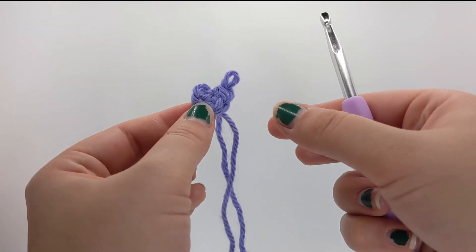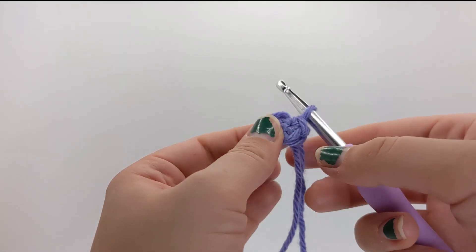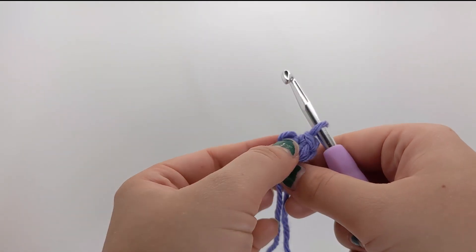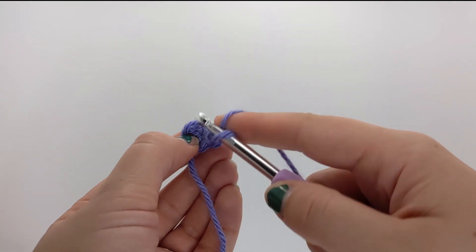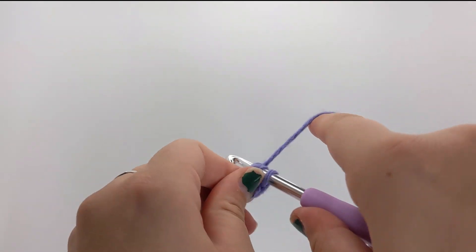And then from there, once you've closed it, the way you do working around instead of turning and going back the way you came, you literally just work around. So your next stitch would just go into this first stitch. You just kind of connect straight across and you work from there.